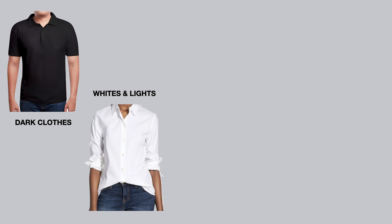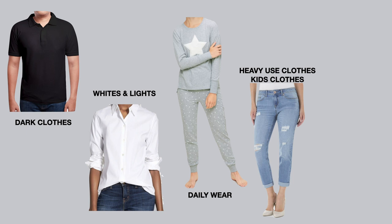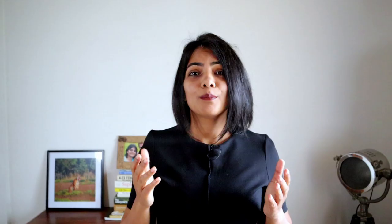The segregation that I use is: dark colors, especially polo shirts; light and white colored clothes; regular use clothes like clothes worn at home; heavily soiled clothes like kids clothes, jeans, etc.; and delicate clothes like woolen and delicate undergarments.